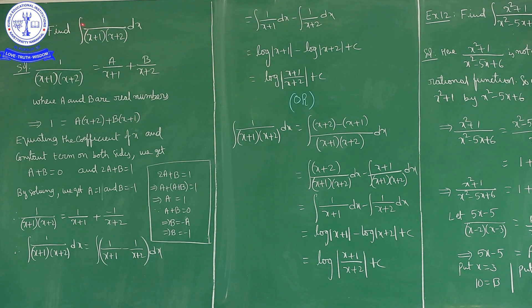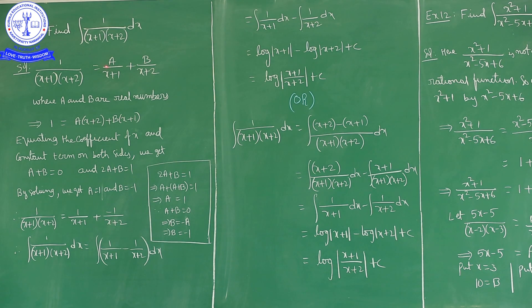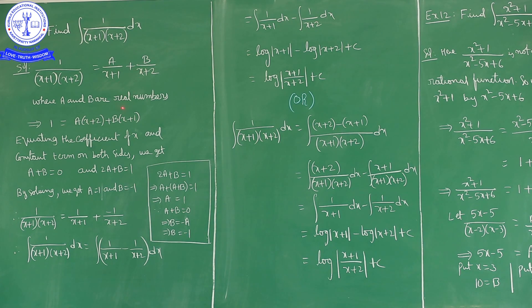Example 11: Find ∫1/[(x + 1)(x + 2)] dx. Here, the numerator is a constant and the denominator is the product of two non-repeated linear factors. So we write 1/[(x + 1)(x + 2)] = A/(x + 1) + B/(x + 2). Taking LCM and cancelling, we get: 1 = A(x + 2) + B(x + 1), where A and B are real numbers to be found.